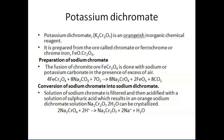Potassium dichromate is an orangish inorganic chemical reagent and it is prepared from the ore called chromate, ferrochrome, or chrome iron. In order to prepare potassium dichromate, we have to follow certain steps.